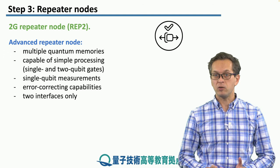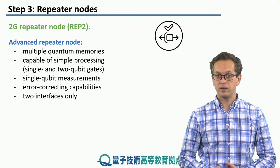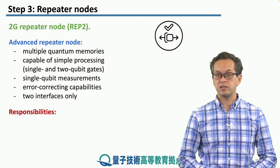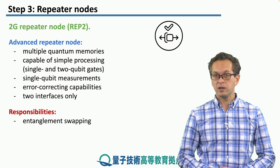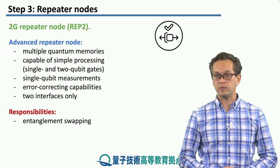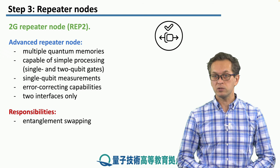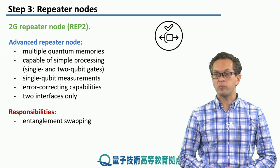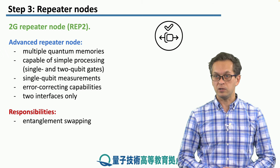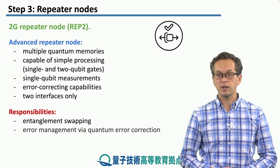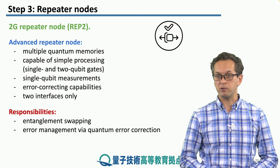But again, it only has two interfaces — one to the left neighbor and one to the right neighbor. The responsibilities are very similar: it needs to perform entanglement swapping, but because the bell pairs are now encoded into error correcting codes, this entanglement swapping operation is more complex in terms of the physical operations the node needs to apply. It also takes part in error management via quantum error correction.